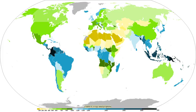The five primary classifications can be further divided into secondary classifications such as rain forest, monsoon, tropical savanna, humid subtropical, humid continental, oceanic climate, Mediterranean climate, steppe, subarctic climate, tundra, polar ice cap, and desert. Rain forests are characterized by high rainfall, with definitions setting minimum normal annual rainfall between 1750 and 2000 mm. A tropical savanna is a grassland biome located in semi-arid to semi-humid climate regions of subtropical and tropical latitudes, with rainfall between 750 and 1270 mm a year. They are widespread in Africa and also found in India, the northern parts of South America, Malaysia, and Australia.